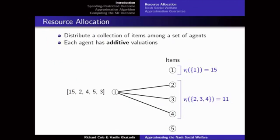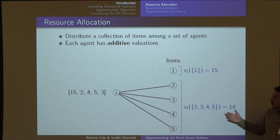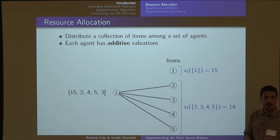The part where additive makes more sense is when you have more than one item. When the player is allocated items 2 and 3, his value is the sum of these two — that's where additive comes from. If he gets 2, 3, and 4, his value is 11. With 2, 3, 4, and 5, his value would be 14. You just sum up the corresponding numbers. This tells us, for example, if you had to choose between giving this player one item or the bundle of items 2, 3, 4, and 5, the player actually prefers the first item — it tells us in a concise way what the preferences of the player are.